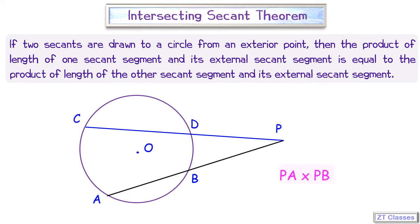Then by this theorem, the product of PA into PB, so this is your PA into PB, so product of this length will be equals to product of PC into PD. This is what is intersecting secant theorem.